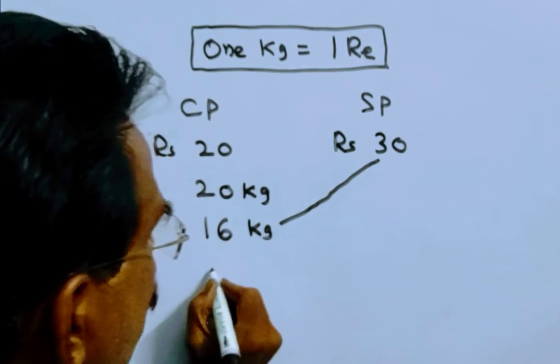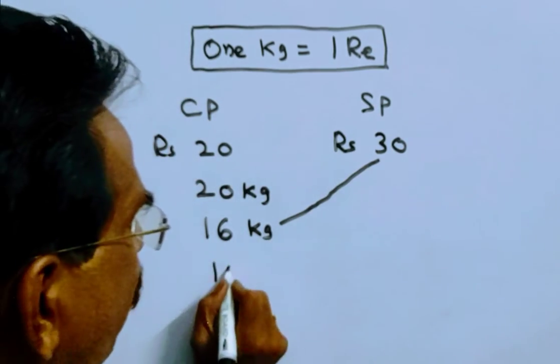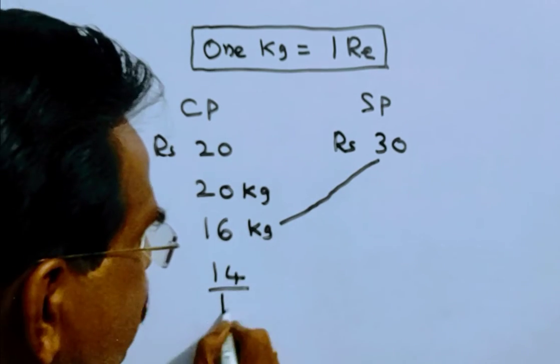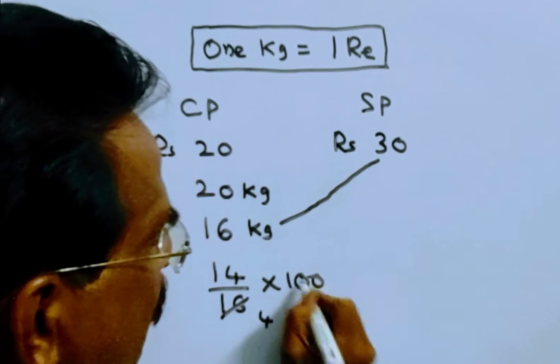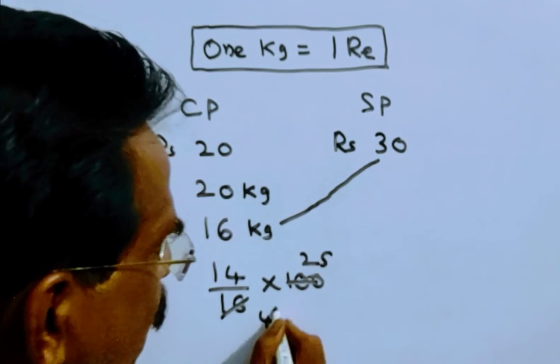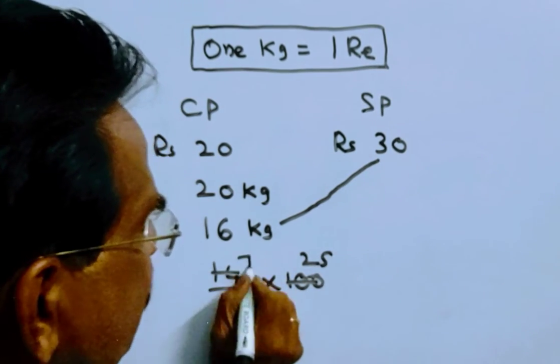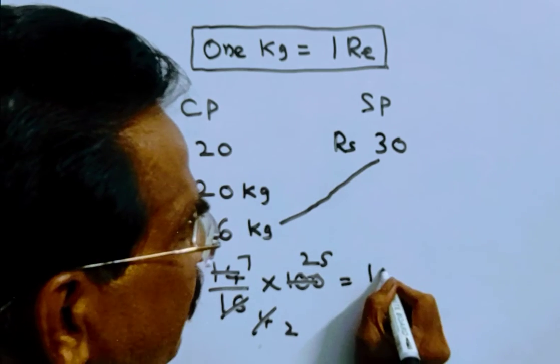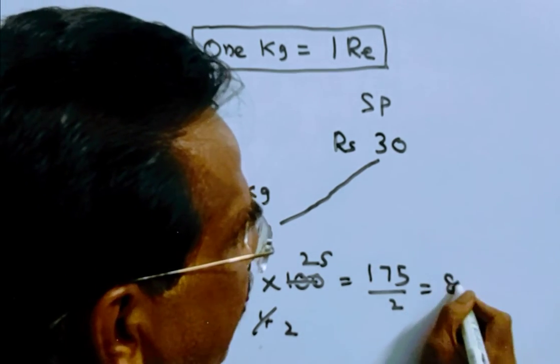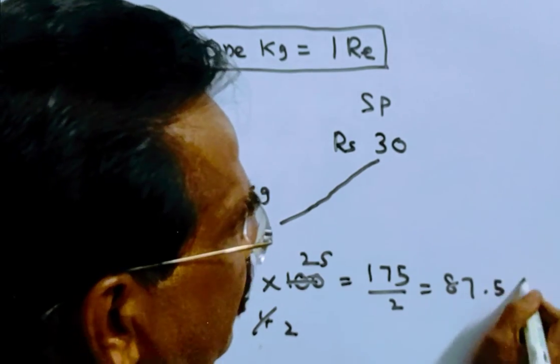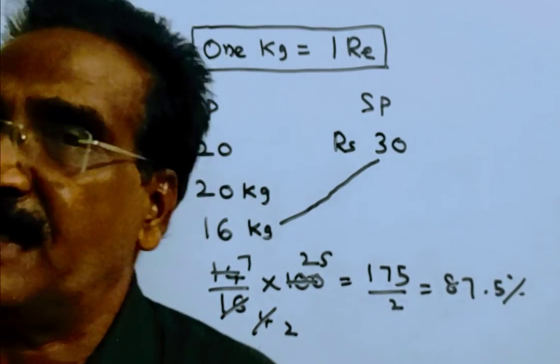So profit is 14. Profit by cost price: 14 by 16 into 100. Simplifying to 7 into 100 by 8, which equals 175 by 2, which equals 87.5 percent profit percentage. Thank you.